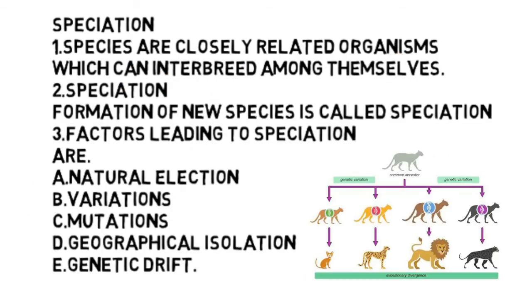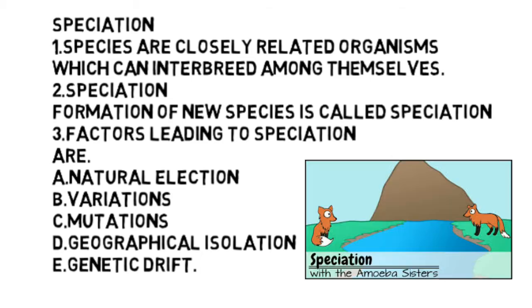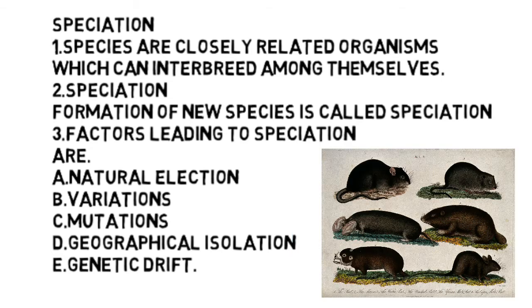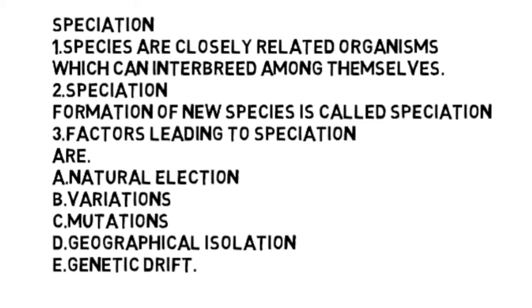Next topic: speciation. What are species? Species are closely related organisms which can interbreed among themselves. Dogs and dogs belong to one species; cats and cats belong to one species. Dogs and cats are different species because they cannot interbreed. The formation of new species is called speciation. The factors leading to speciation are natural selection, variations, mutations — mutation means sudden heritable changes occurring at the gene level — and geographical isolation or genetic drift. These five factors are responsible for speciation or the formation of new species.